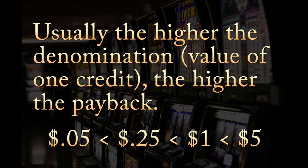In my experience, this upward climb of payback percentage tops out at around the $5 machines, meaning that the greatest jumps are between nickel and quarter, quarter and dollar, and dollar and $5. After that, payback doesn't go up much, if at all. This means that a $100 machine may not have a much better payback than a $5 machine, while that $5 machine will have an incredibly higher payback percentage than a quarter machine of the same type.